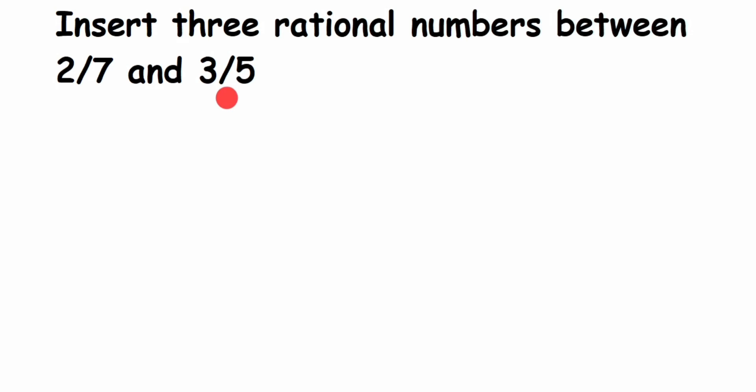So how do we solve such questions? The very first thing we should do is look at the denominators. Here we have 7 and 5 - they are not the same. If they were the same it would be easy to find, but if they're not the same, the very first step is to make the denominators the same.